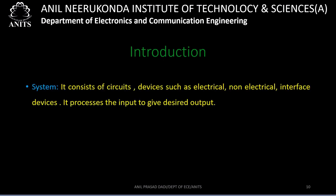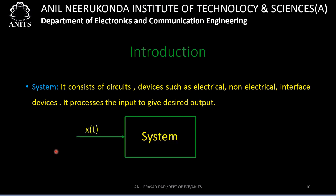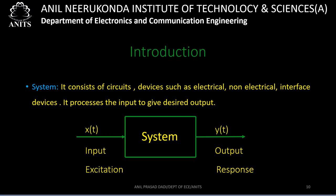The next important term is 'system.' A system consists of circuits and devices — not only electrical devices but also non-electrical and sometimes interface devices. The basic function of a system is to process the input to give the desired output. The input to the system is called excitation and the output of the system is called response.